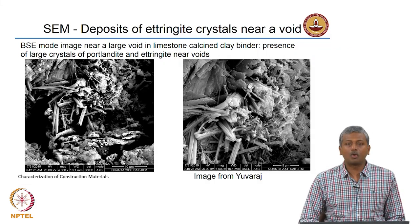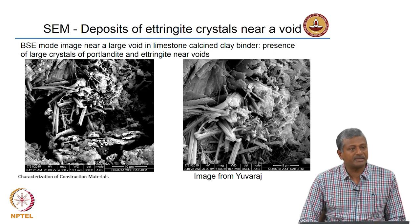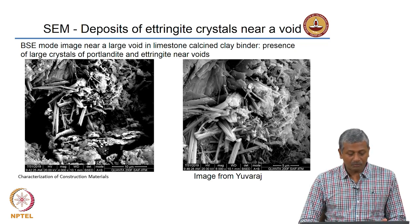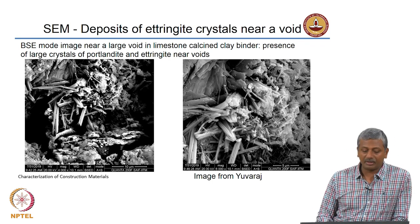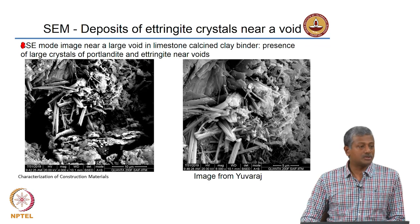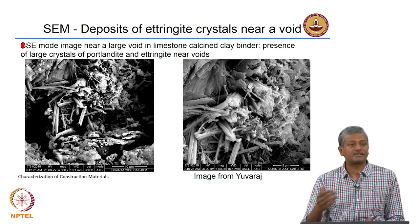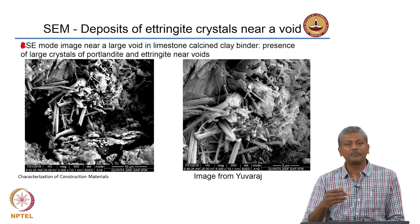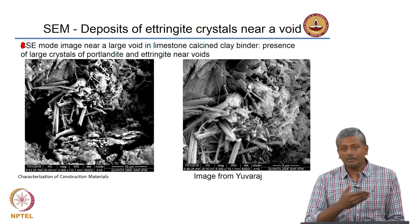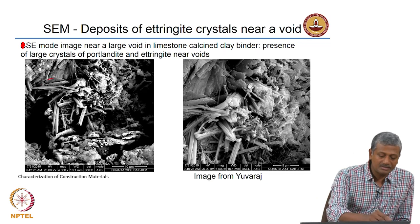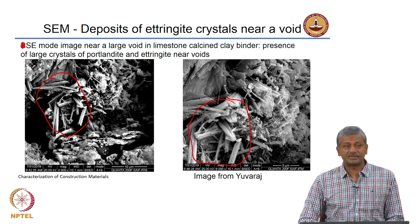SEM is also commonly used to understand the structure of hydration products. Here we see a secondary electron image showing deposition of ettringite crystals near a void in a limestone calcined clay (LC3) binder. In LC3 binders, where cement is replaced with a mixture of limestone and calcined clay, the chemistry works such that ettringite formed in the initial phases of cement hydration remains stable and does not convert to monosulphate. You can see these needle-like features which are basically ettringite deposits forming inside the system.